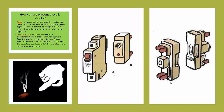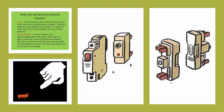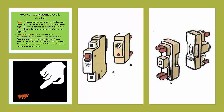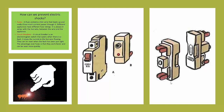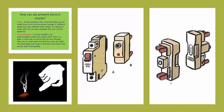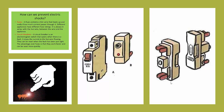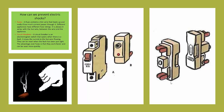What is a circuit breaker? The circuit breaker is an electromagnet switch that opens when there is a fault. It stops the current in the live wire from flowing. They can be reset when the fault has been cleared.